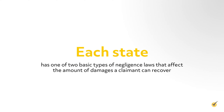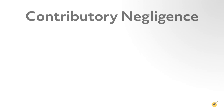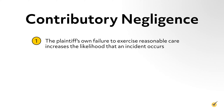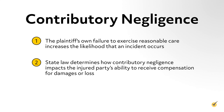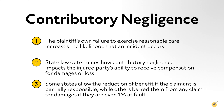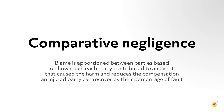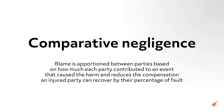Each state has one of two basic types of negligence laws that affect the amount of damages a claimant can recover. Contributory negligence is when the plaintiff's own failure to exercise reasonable care increases the likelihood that an incident occurs; state law determines how this impacts the injured party's ability to receive compensation, with some states reducing benefit if the claimant is partially responsible and others barring any claim if they are even one percent at fault. Comparative negligence apportions blame between parties based on how much each contributed to the harm, reducing compensation by the injured party's percentage of fault.